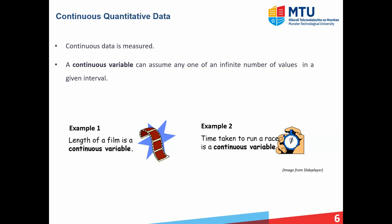Now, the real big difference between continuous and discrete variables or data is that a continuous variable can take on any of an infinite number of values in a given interval. Let's consider example one down here to illustrate that.